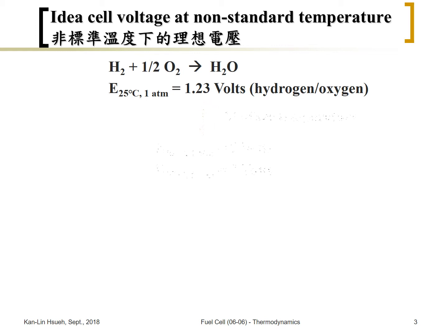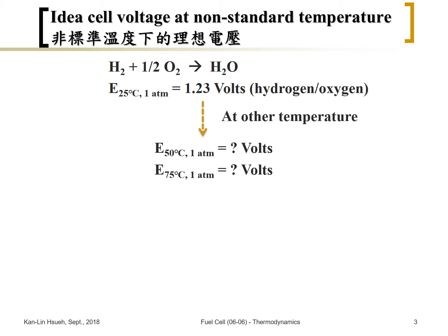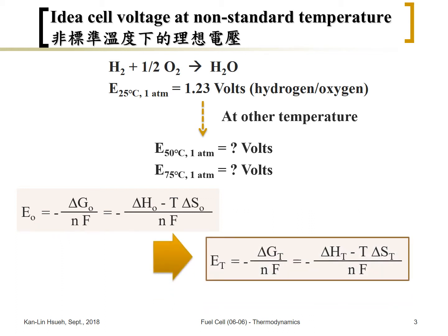But what if you want to calculate the cell voltage at a different temperature but at the same pressure? From thermodynamics, the cell voltage equals ΔG over nF. So if we know those values at other temperatures, we can calculate the cell voltage. The first thing we need to do is figure out how to calculate the enthalpy change and entropy change at other temperatures, and then we can calculate the cell voltage.